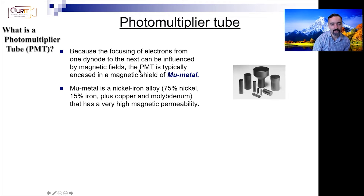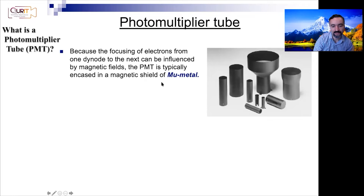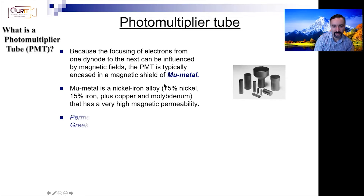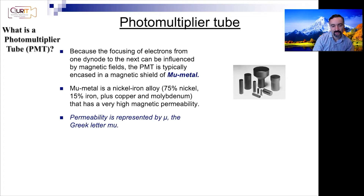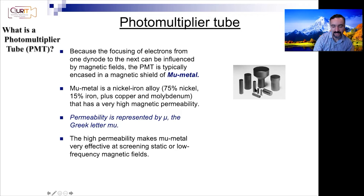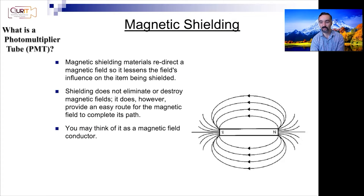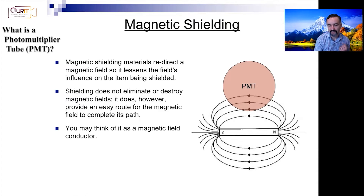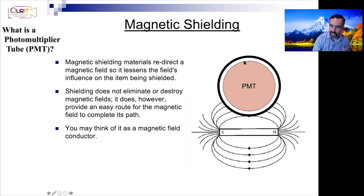PMTs can be influenced by magnetic fields. As electrons are moving inside, applying a magnetic field will distort their pathways. Typically they are encased in a mu metal shield — an alloy with very high magnetic permeability — which screens and protects against low magnetic fields by redirecting them so they don't impact the PMT.